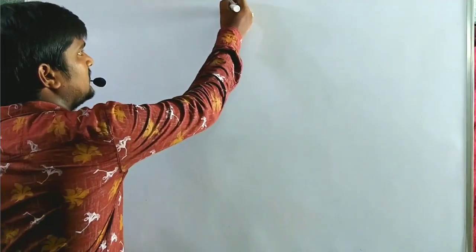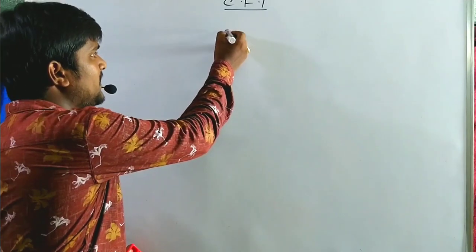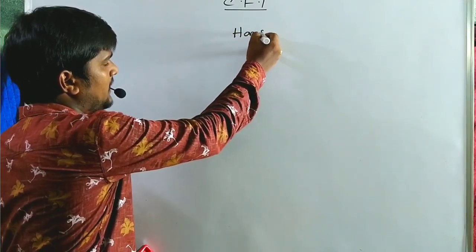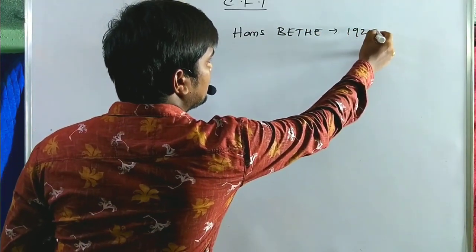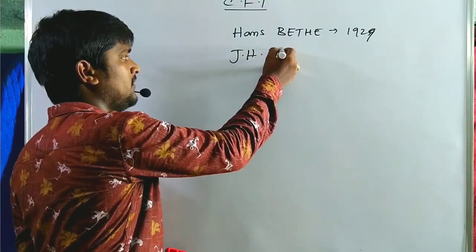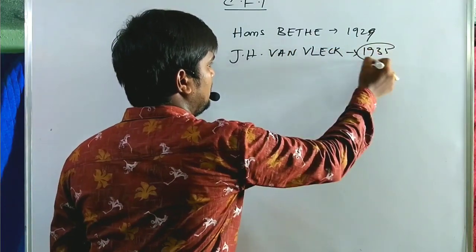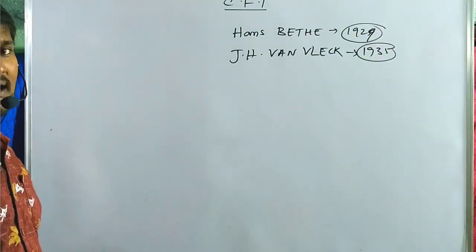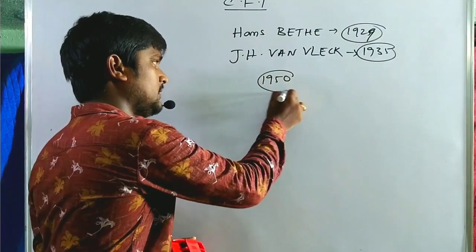Hi, welcome to RPB Resonance Chemistry. Today our topic is crystal field theory. Crystal field theory was explained by Hans Bethe in 1929. It was implemented by J.H. Van Vleck in 1935. But it was applied to crystals after 1950 only.